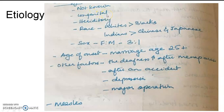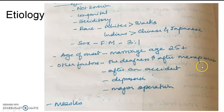Coming to the etiology — most cases have unknown or idiopathic etiology. Some cases are congenital, present from birth. Others are hereditary, with a positive family history. Regarding race, it is more common in white race than black race, and more common in Indians than Chinese and Japanese. Regarding sex, it more commonly involves females at a 3:1 ratio. Age of onset is usually between 20 to 30 years. Deafness worsens after menopause, after an accident, major depression, major operation, or viral infection.